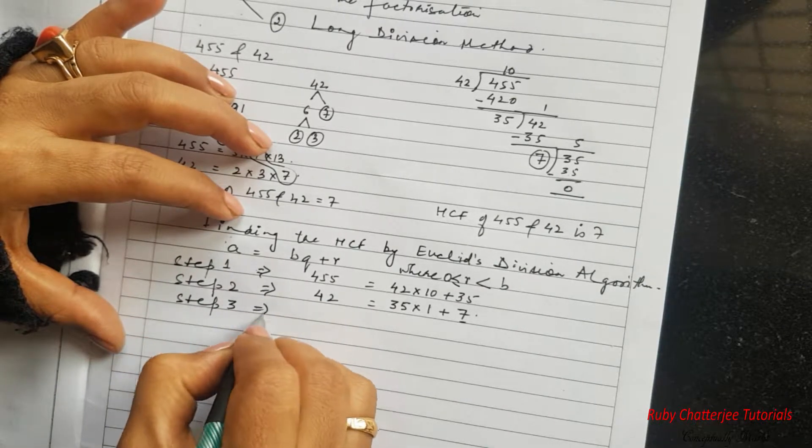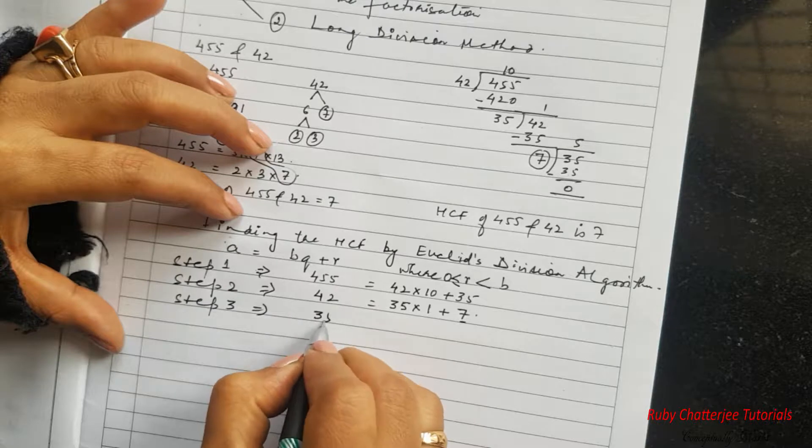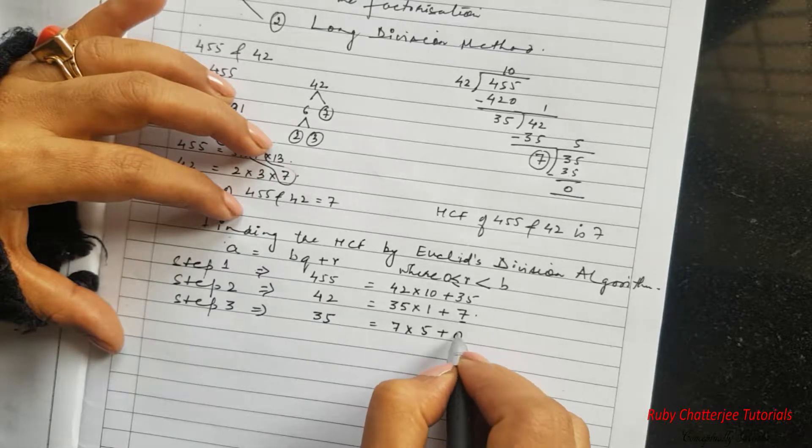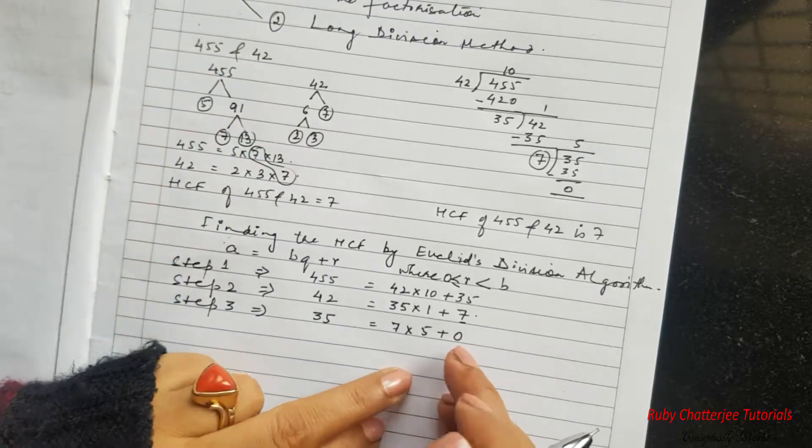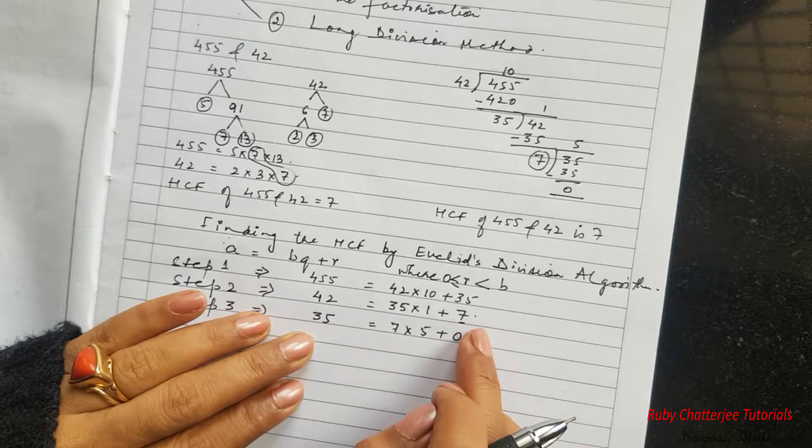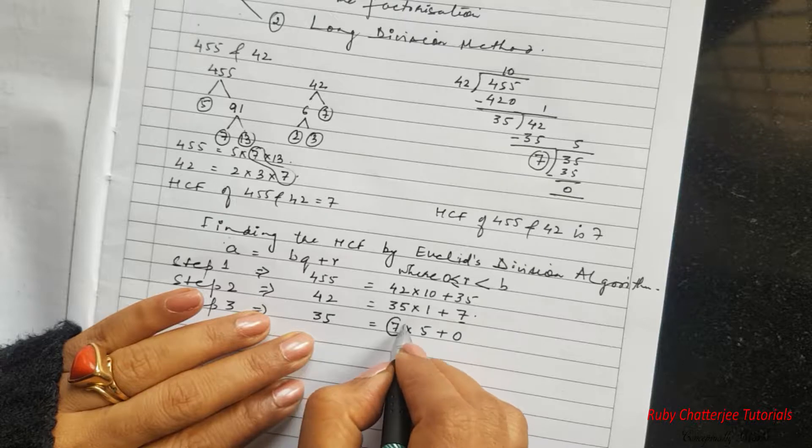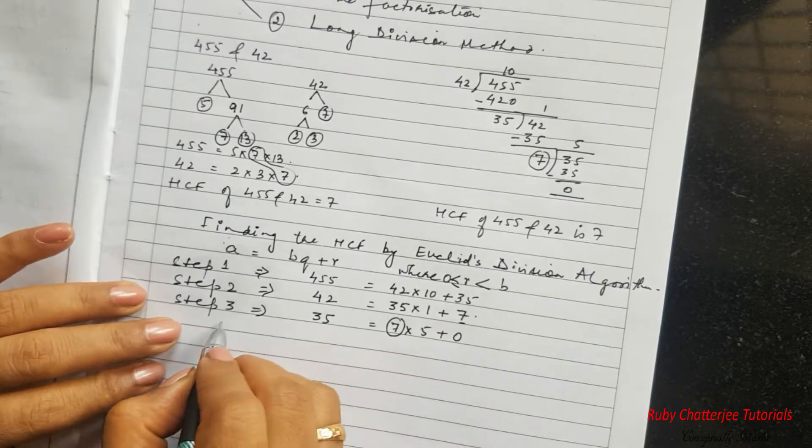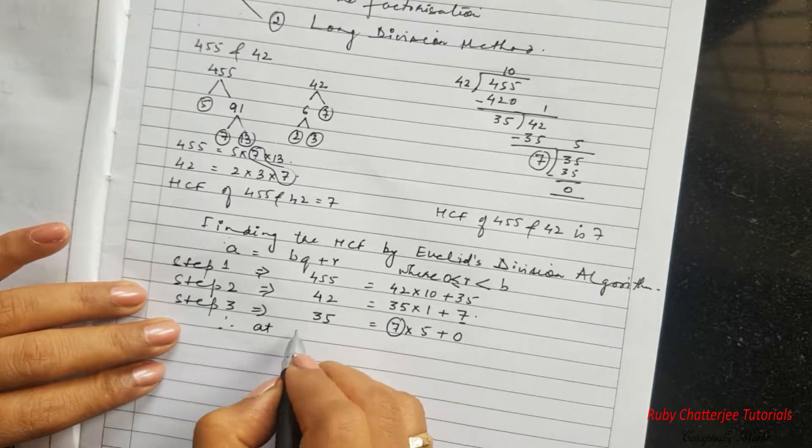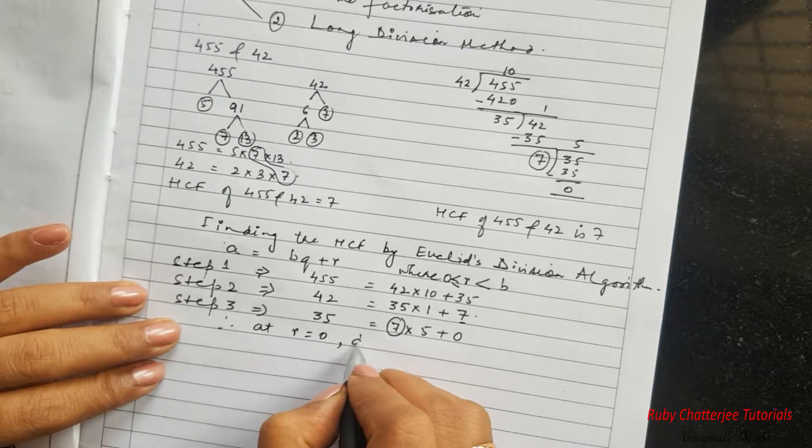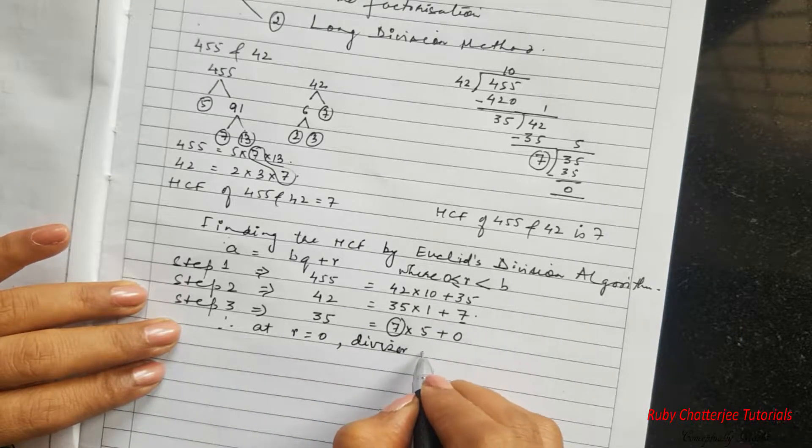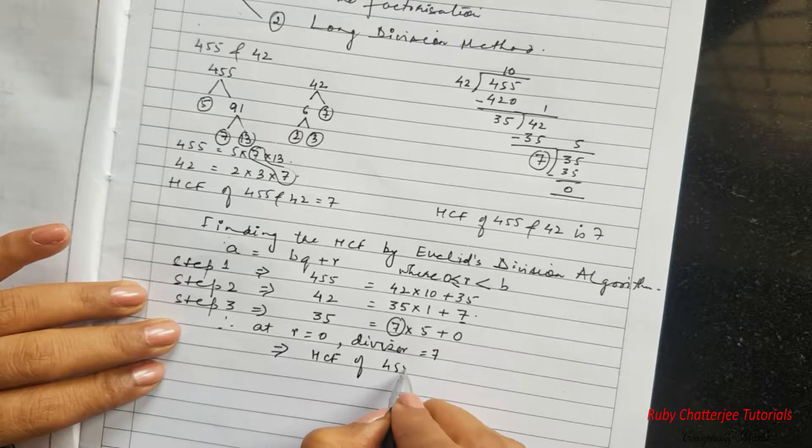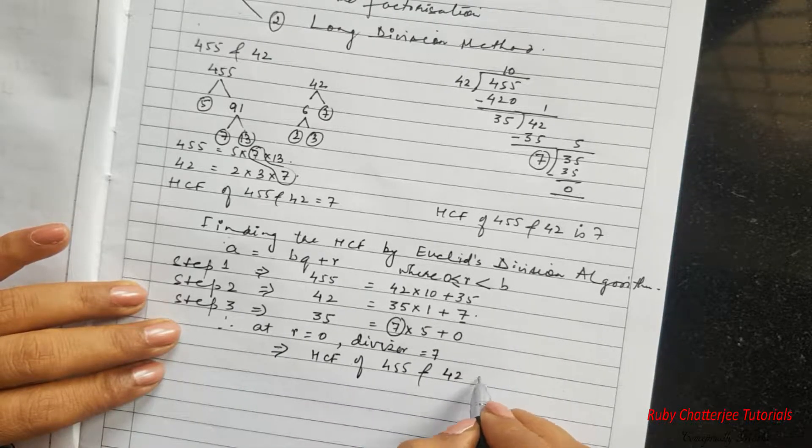So in the step 3 we get the dividend that is A is equal to divisor into quotient that is 5 plus the remainder 0. Now in the third step when we applied Euclid's Lemma our remainder was 0. So at this stage whatever is the value of the divisor becomes the HCF. Therefore at R equal to 0, divisor is equal to 7, which implies HCF of 455 and 42 is 7.